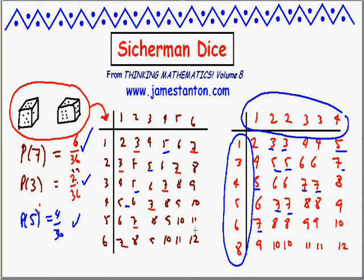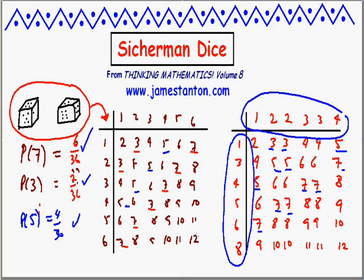Which is interesting, because now I wonder: what's it like to play Monopoly with Sicherman dice? In some sense you might say it's exactly the same — the chances of rolling a 7, or a 3, or a 12, or a 9 are exactly the same. The game should be the same. But maybe there's an issue of doubles. In Monopoly, if you roll doubles you get to go again — so maybe the doubles issue makes Monopoly different with Sicherman dice.